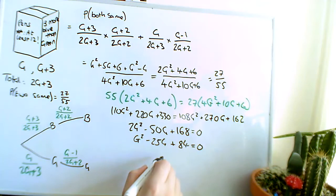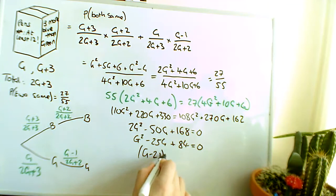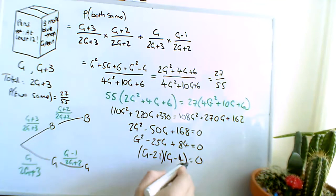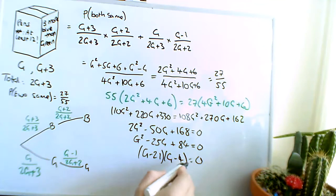So you should have 21 and 4, so G minus 21, and G minus 4 equals 0, so G is equal to 4, or 21.